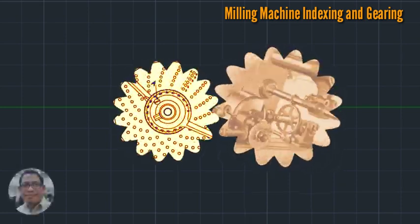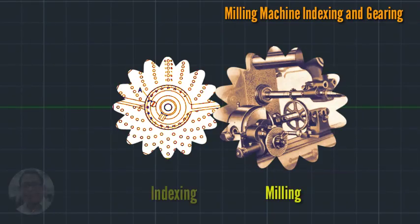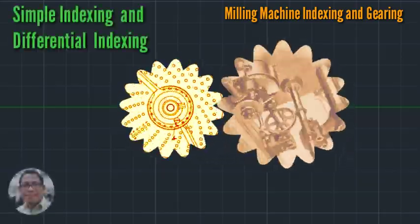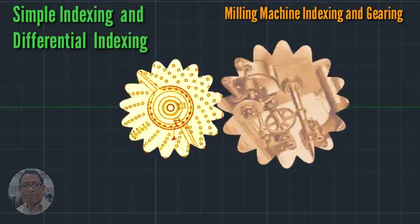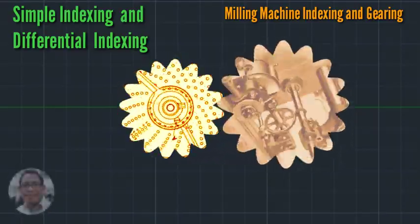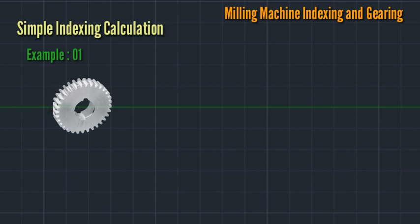Hello guys, welcome to my channel. This video is about milling indexing, simple and differential indexing, for calculating gear train or compound gear. Let's proceed to simple indexing. Example number one: we have a spur gear with 33 teeth. Let's calculate the movement.